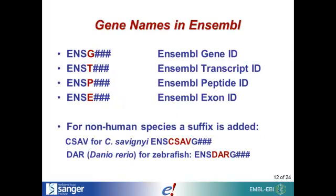All transcripts have an Ensembl transcript identifier: ENST. ENSG is the Ensembl gene identifier, ENSP is a protein identifier, and ENSE is the exon ID. These are stable, meaning that in the future, even through updates, you'll see the same gene ID. For species other than human, a short code is added to represent the species name. For example, for Ciona savignyi you have ENSC Sav, G for gene, and a unique 11-digit identifier. For Danio rerio, which is zebrafish, you have ENS-DARG.